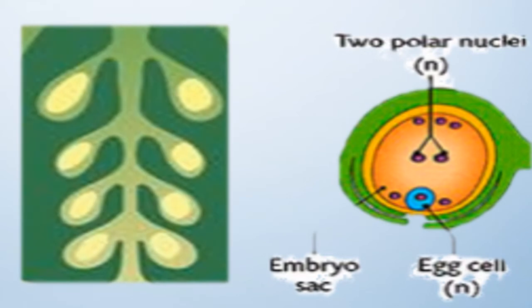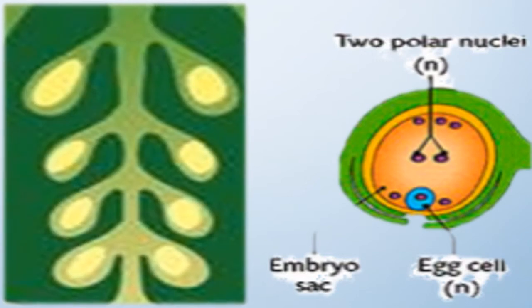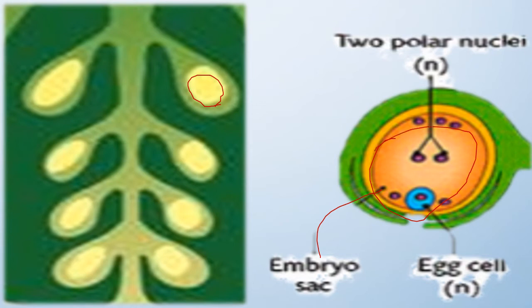An embryo sac is formed in each ovule by meiosis. Each embryo sac consists of a haploid egg cell and two polar nuclei — two haploid polar nuclei are formed inside the embryo sac.